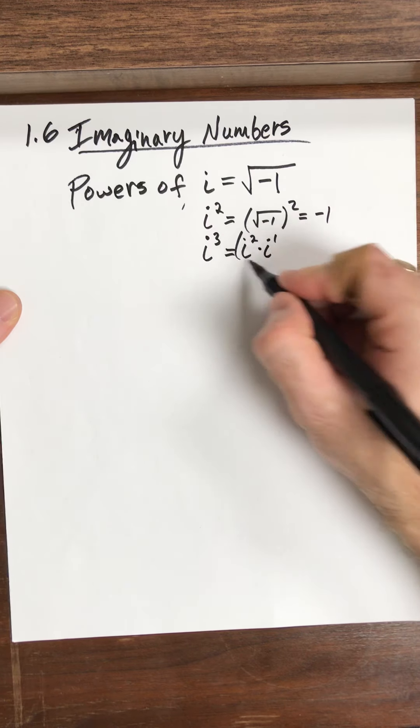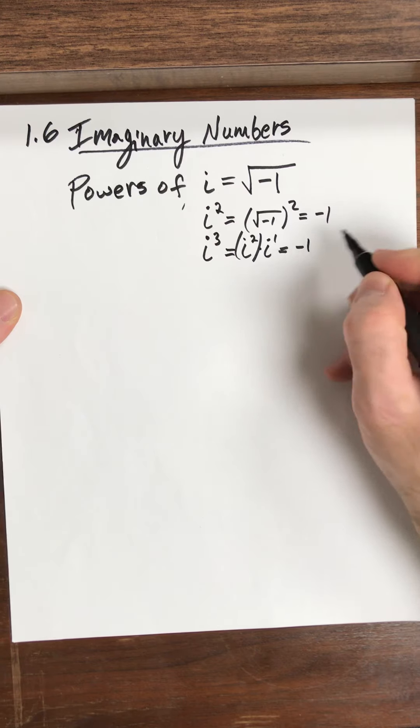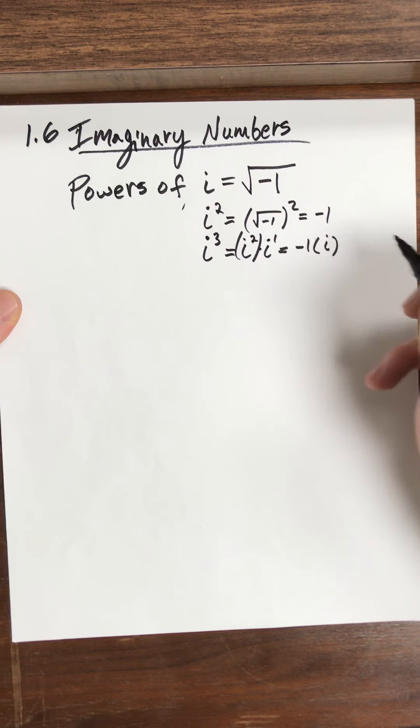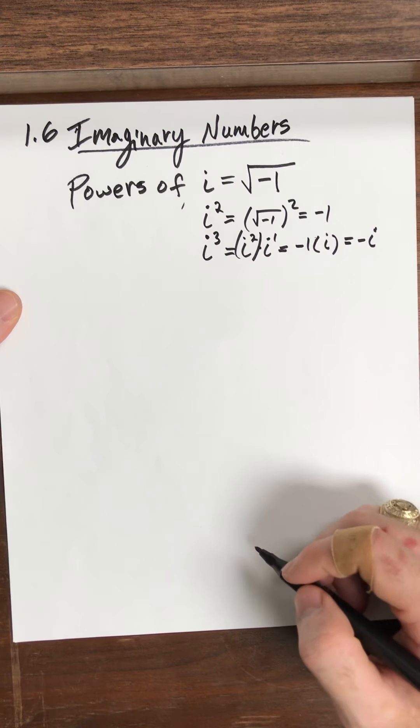So I know what i squared equals. i squared is equal to negative 1. So I have negative 1 times i. So i cubed is negative i.